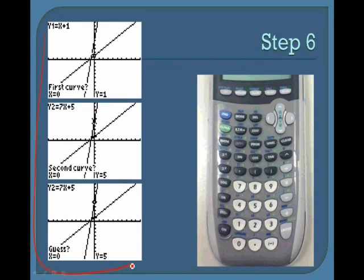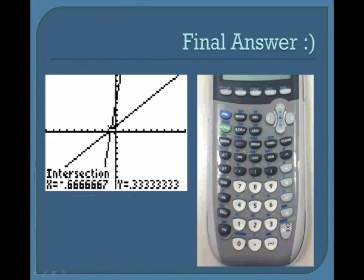Now you will see three steps. To get through these three steps, just click enter three times. Then, at the bottom left-hand corner, you will see your intersection.